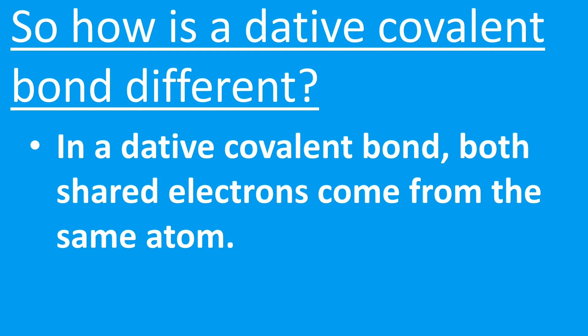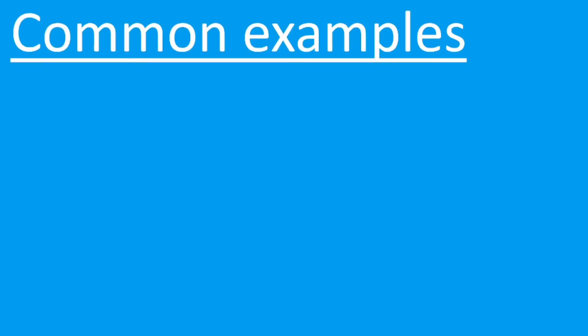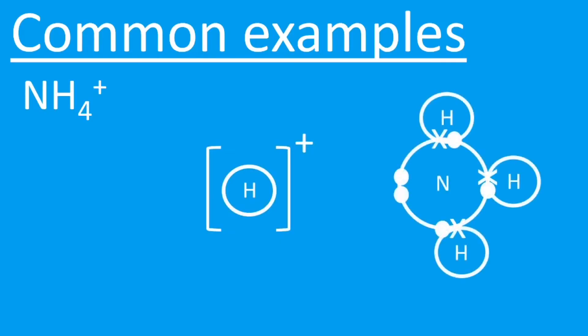The best thing to do would be just to talk through some examples and show you what we mean by a dative covalent bond. One common example is the ammonium ion, NH4+.